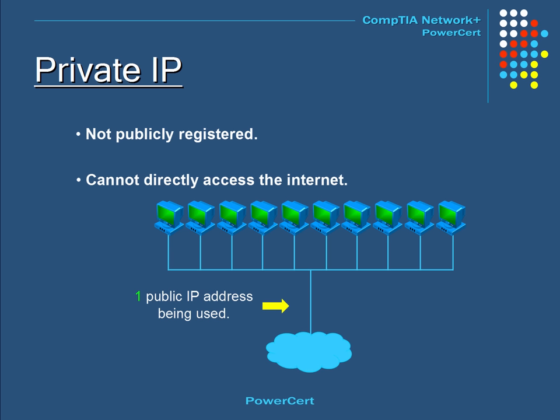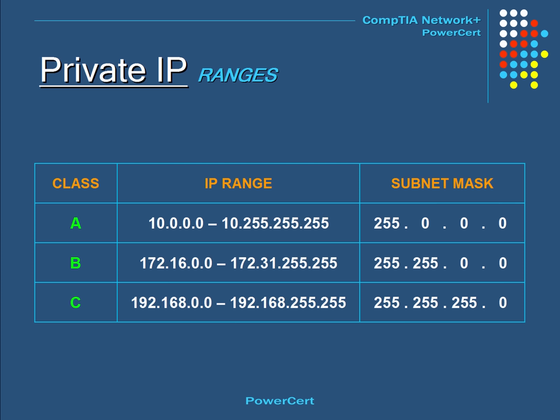The RFC-1918 standard created private IP addressing to prevent a shortage of public IP addresses available to ISPs and subscribers. Private IP addresses are typically used on local networks such as homes, schools, and businesses. Private IP ranges have three classes: Class A starts with 10, Class B starts with 172, and Class C starts with 192.